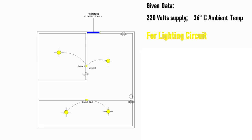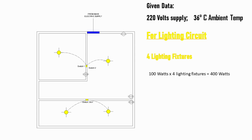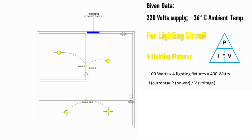For the lighting circuit, NEC states that 100 watts shall be the maximum load for each household lighting outlet. Adopting 100 watts per lighting outlet: 4 lighting outlets × 100 watts = 400 watts. Applying Ohm's law to get the required current: Current = Power ÷ Voltage = 400 watts ÷ 220 volts = 1.82 amperes.